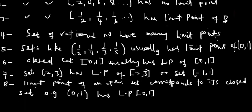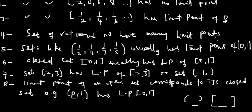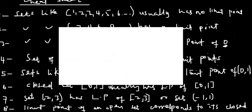The limit point of an open set like (2, 3) corresponds to a closed set. For example, the open set (0, 1) has a limit point of the closed set [0, 1]. Open brackets indicate an open set; closed brackets indicate a closed set. That brings us to the end of this video — please subscribe, like, share, and let me know your questions in the comments. See you in the next video!